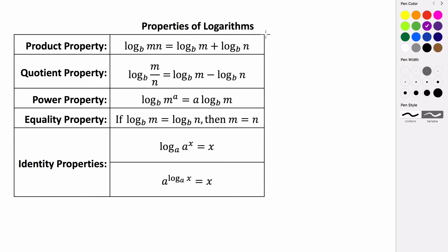So let's say you had something like log base 3 of 5x. If we have log base 3 of 5x, we can split this into a sum of two logs with the same base. So log base 3 — it's just going to be the factors of your original argument — so log base 3 of 5 plus log base 3 of x.